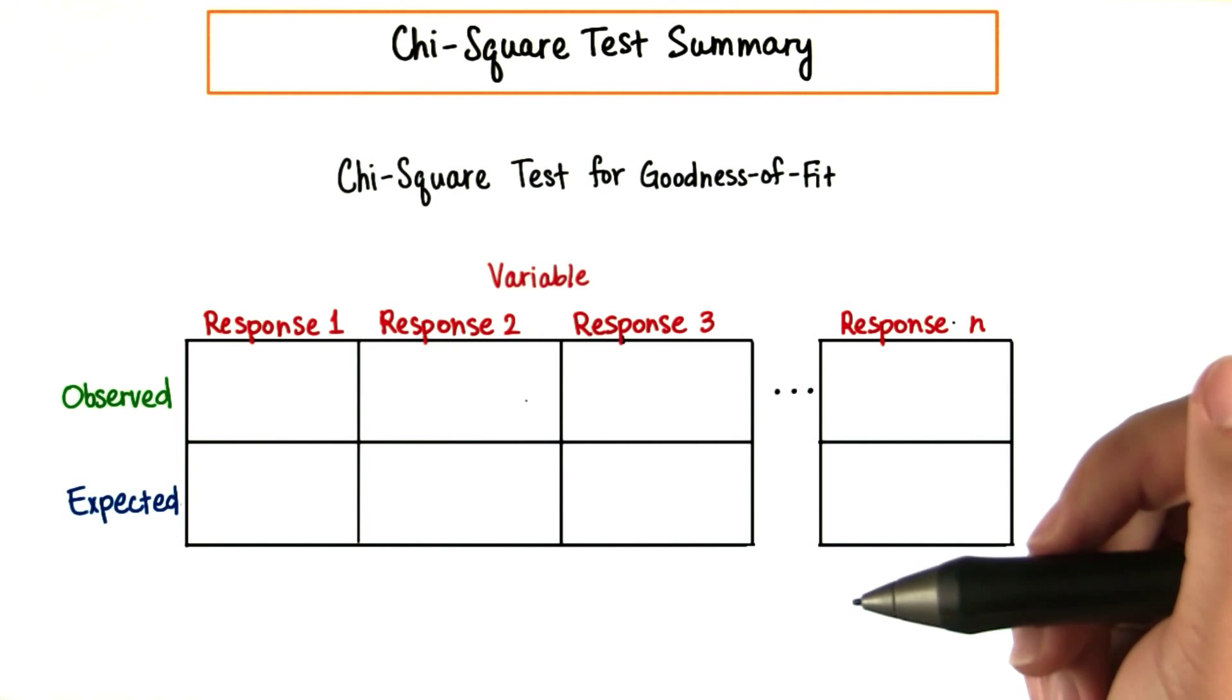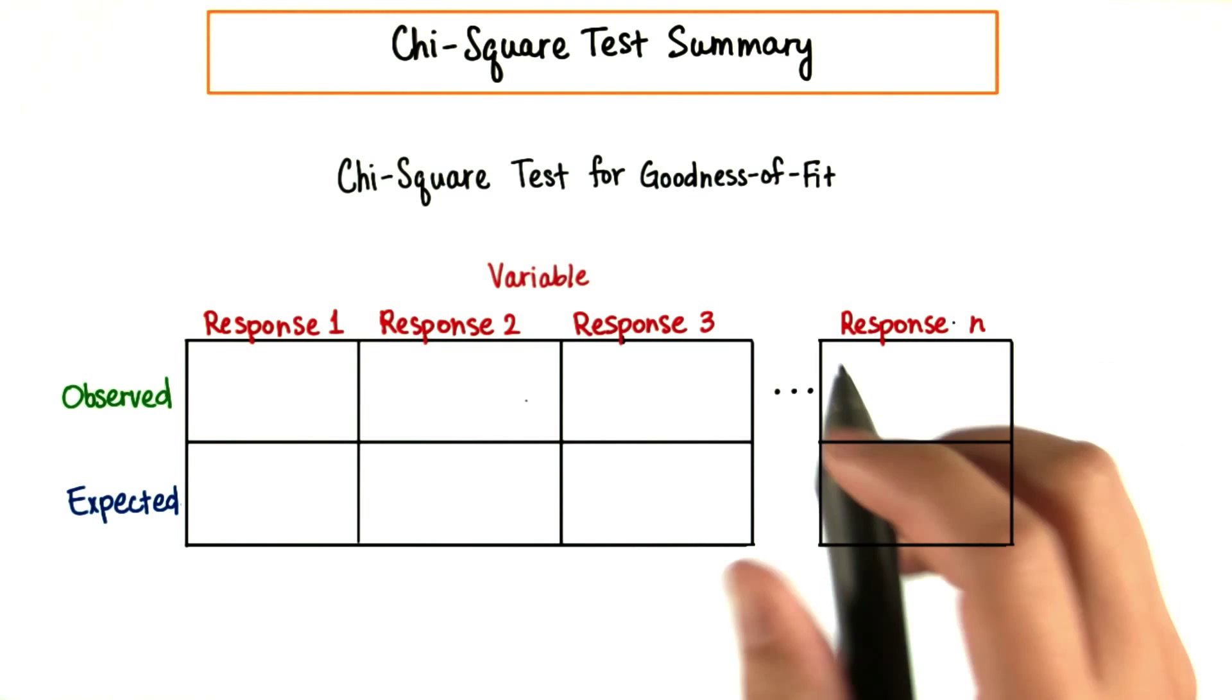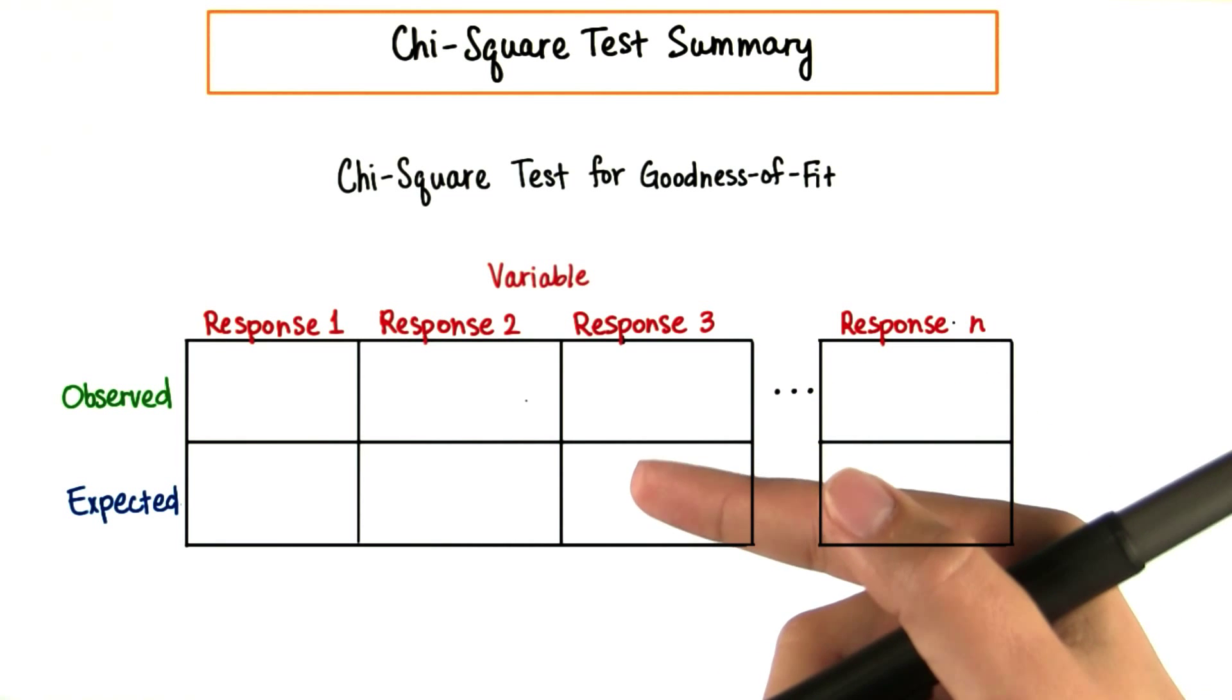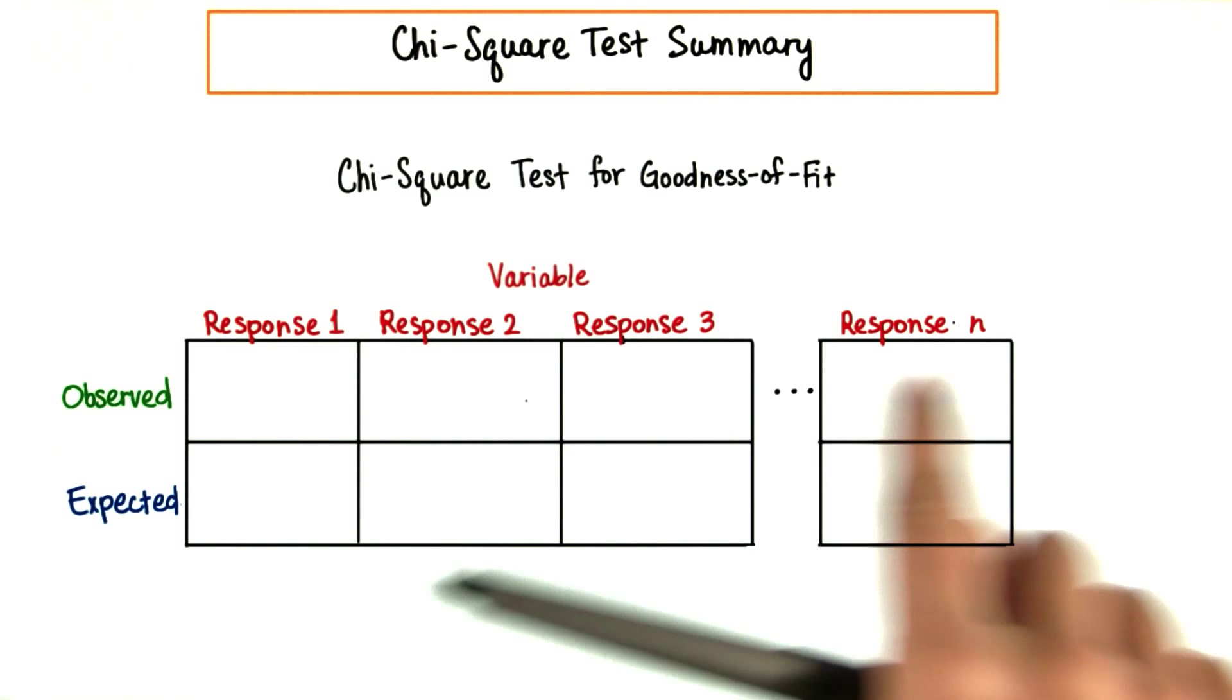Let's summarize this lesson. Chi-squared tests can check for how well observed values fit the expected values for categorical data.